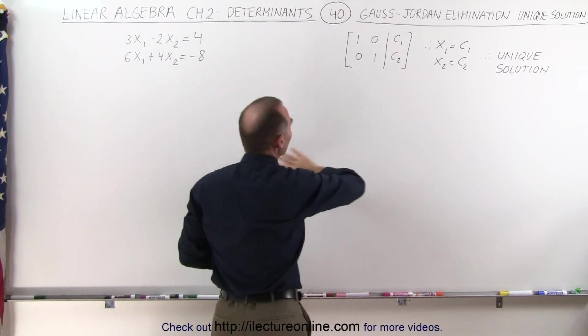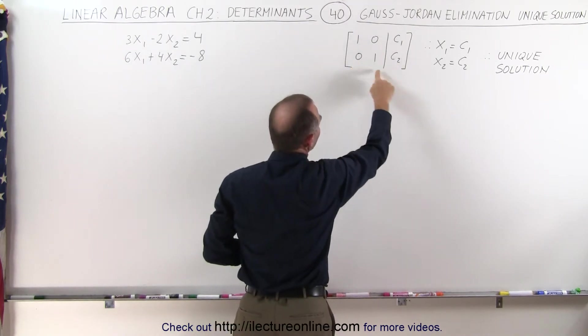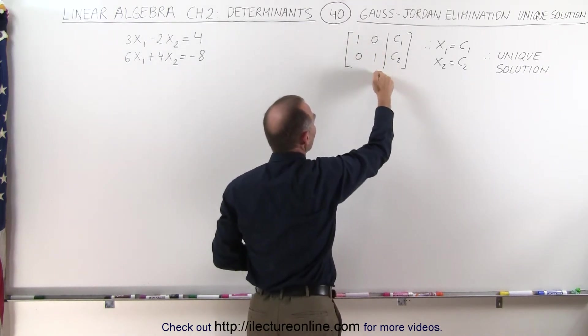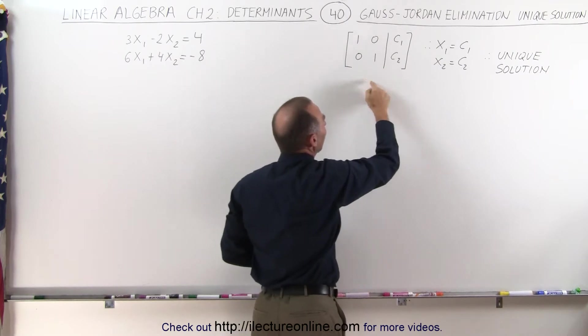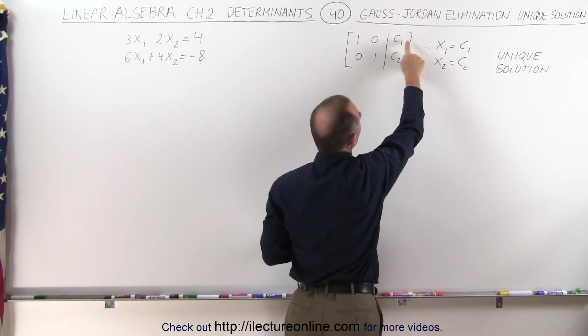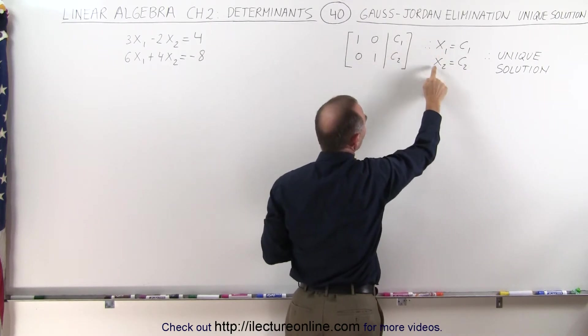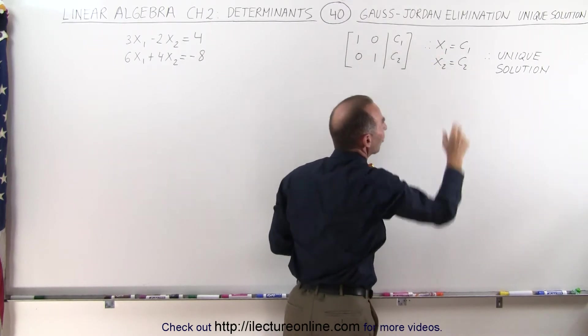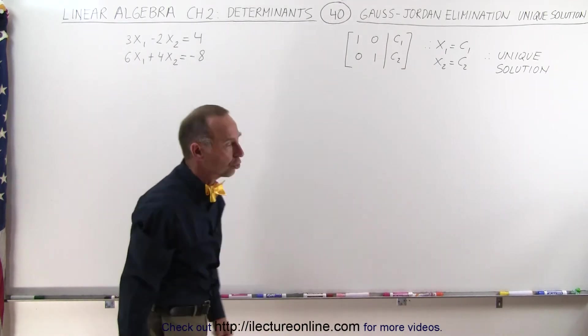...and we change the format so that it looks like this, so we have ones across diagonals and zeros everywhere else, and these are two constant numbers, then we can say that x1, the first variable, is equal to constant 1, and the second variable is equal to constant 2, and therefore we have a unique solution.